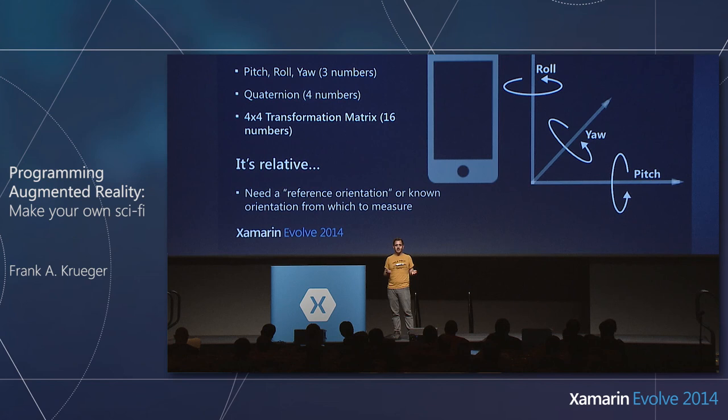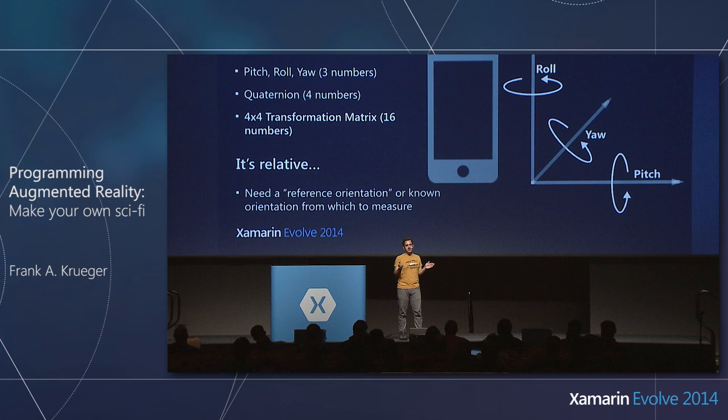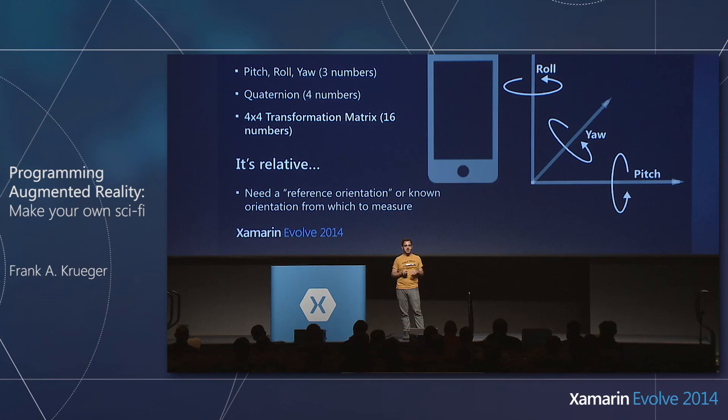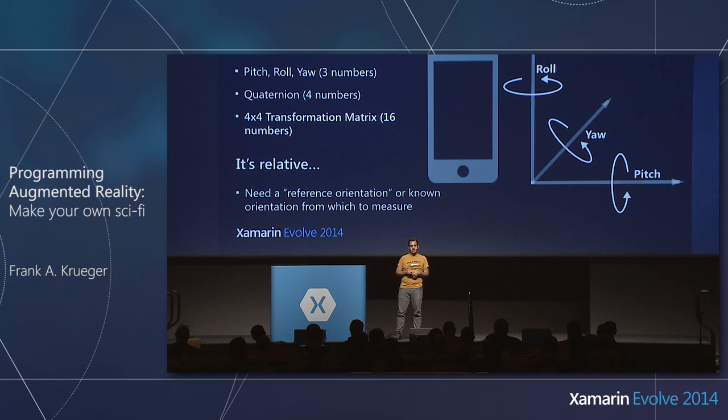It's not good enough to say I am rolled 10 degrees — you have to ask, rolled from what? If I'm facing north and roll 10 degrees to the east, that requires stating my initial orientation. Any time you get orientation from the phone, it's the orientation in reference to something.